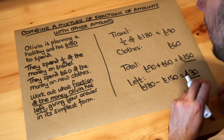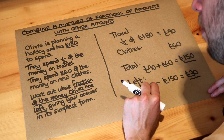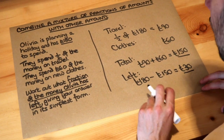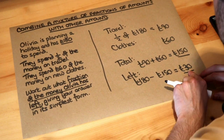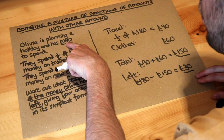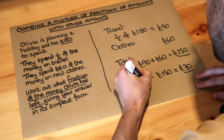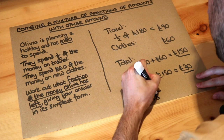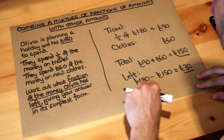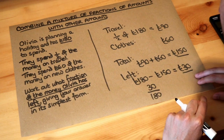We've got £30 left, and it wants that as a fraction of the money that you originally had. If you've got £30 left and you want that as a fraction of the total amount which is £180, you just put £30 out of £180. That says what fraction is £30 of £180 — put it into a fraction: 30/180.